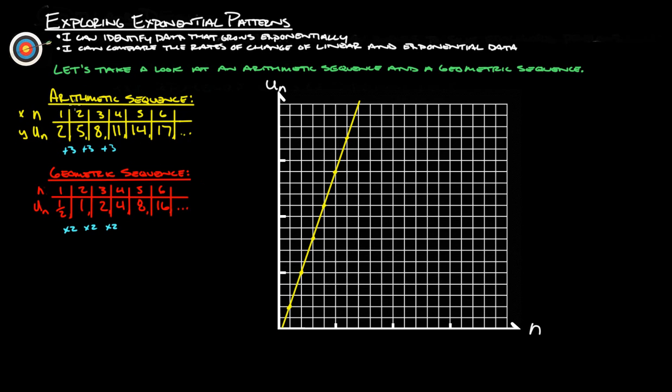So, our arithmetic sequence makes a straight line, which we call linear. So, this is a linear equation.